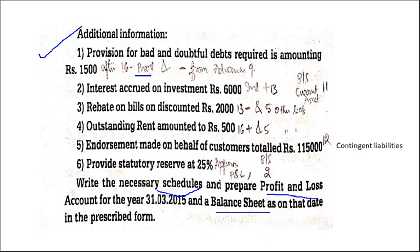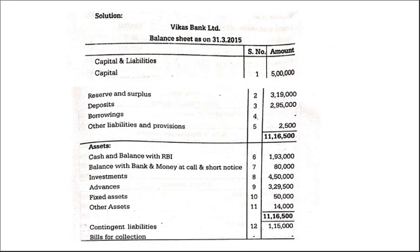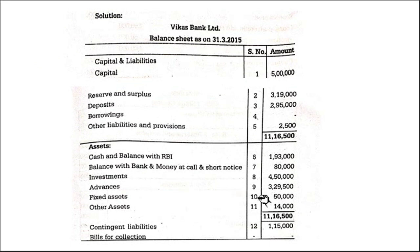So first thing you should know is the various items in the balance sheet and profit and loss account. Schedule 1: capital. 2: reserves. 3: deposits. 4: borrowings. 5: other liabilities and provisions. 6: cash and balances with RBI. 7: balance with bank and money at call and short notice. 8: investment. 9: advances. 10: fixed assets. 11: other assets. 12: contingent liabilities.